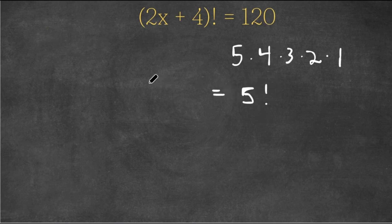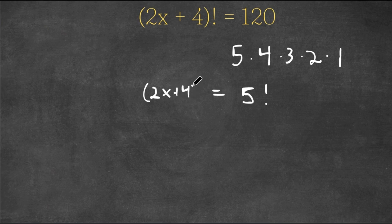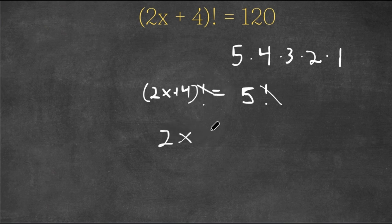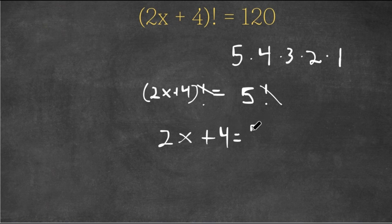So now we have (2x + 4)! is equal to 5!, and we can simply just cancel out these factorials. So now we are left with 2x + 4 is equal to 5. Now if I subtract 4 on both sides,